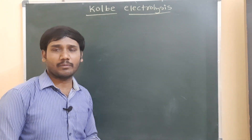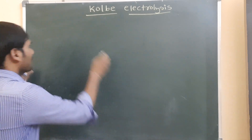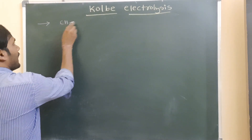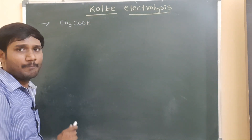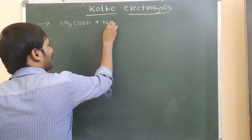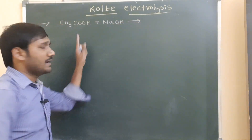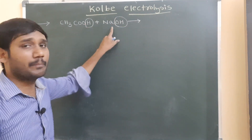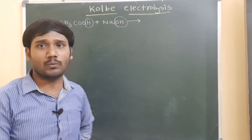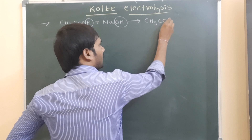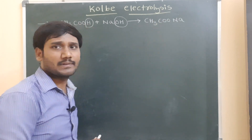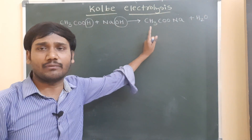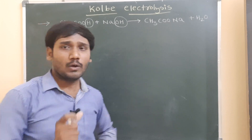Let us see how we are getting the alkanes from sodium or potassium salt of carboxylic acid. First, I am going to prepare the sodium salt of carboxylic acid by taking acetic acid and reacting it with sodium hydroxide. Acid releases H+ ions and base releases OH- ions, and when acid and base react, they form salt and water — the sodium salt of acetic acid.